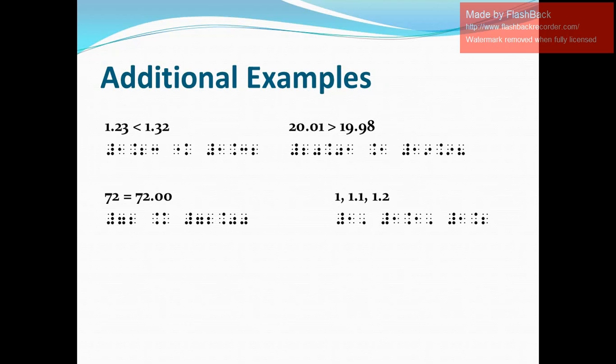For our last example, we have a series of numbers: 1, 1.1, 1.2. In Nemeth, we write the numeric indicator, number 1, then the mathematical comma (dot 6), space, numeric indicator again, 1, decimal point, 1, then dot 6 for the mathematical comma, space, numeric indicator, 1, decimal point, 2.